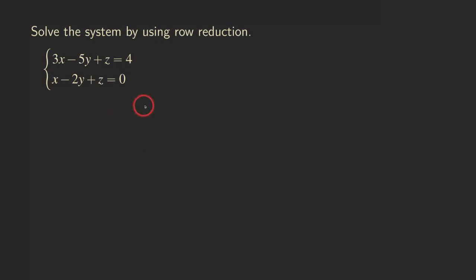First we are going to rewrite the system as an augmented matrix. So the first step is to write it as: we have 3, negative 5, and then 1, and then we have 1, negative 2, and then 1. You can see that this is the coefficient matrix, and then on the right hand side of the bar we get the right hand side of the equation. Now we are going to start doing the row operations.